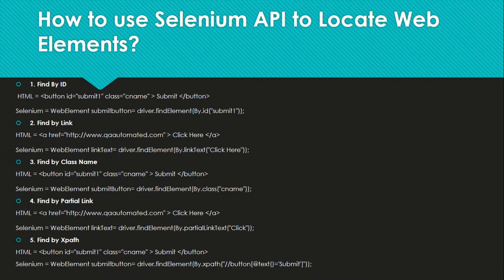Using that ID we can write: WebElement submitButton = driver.findElement(By.id("submit1")). We are declaring a WebElement, naming it submitButton, and using the driver object we call the findElement method with ID as the attribute and 'submit1' as the value. This lets us locate that button and perform any actions we want.